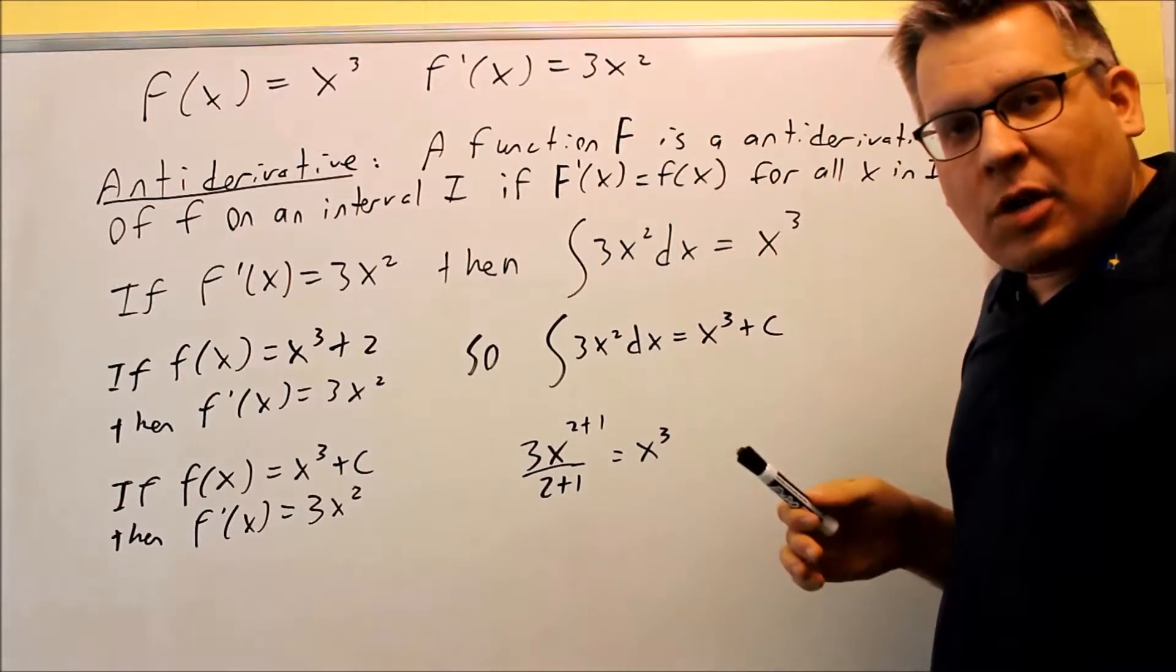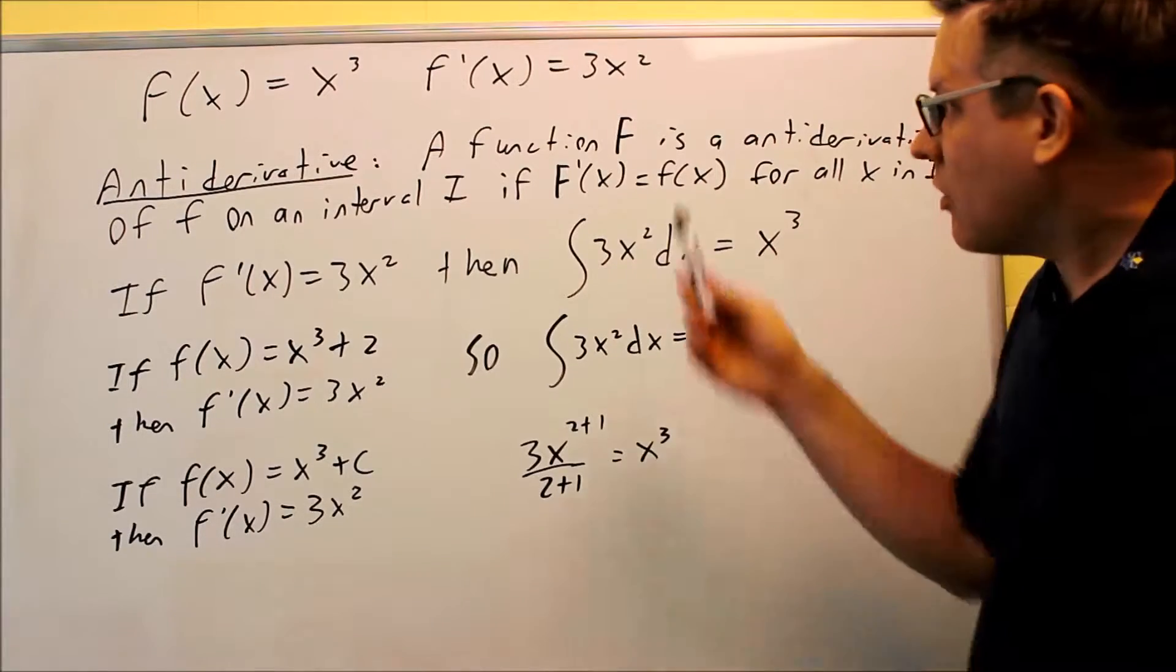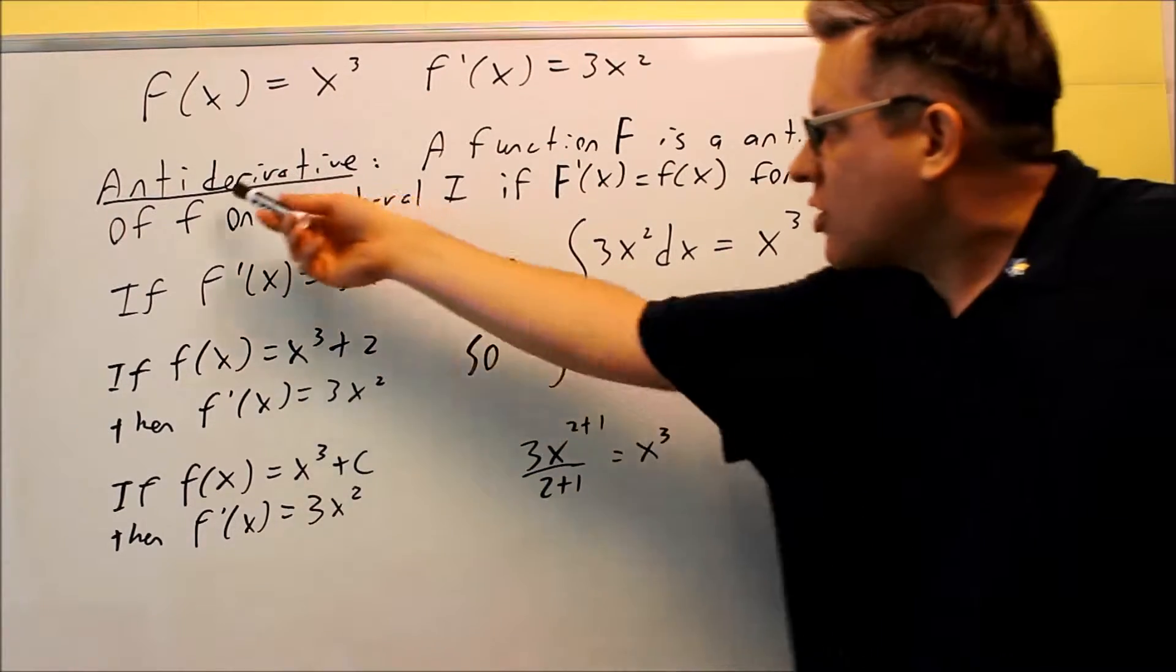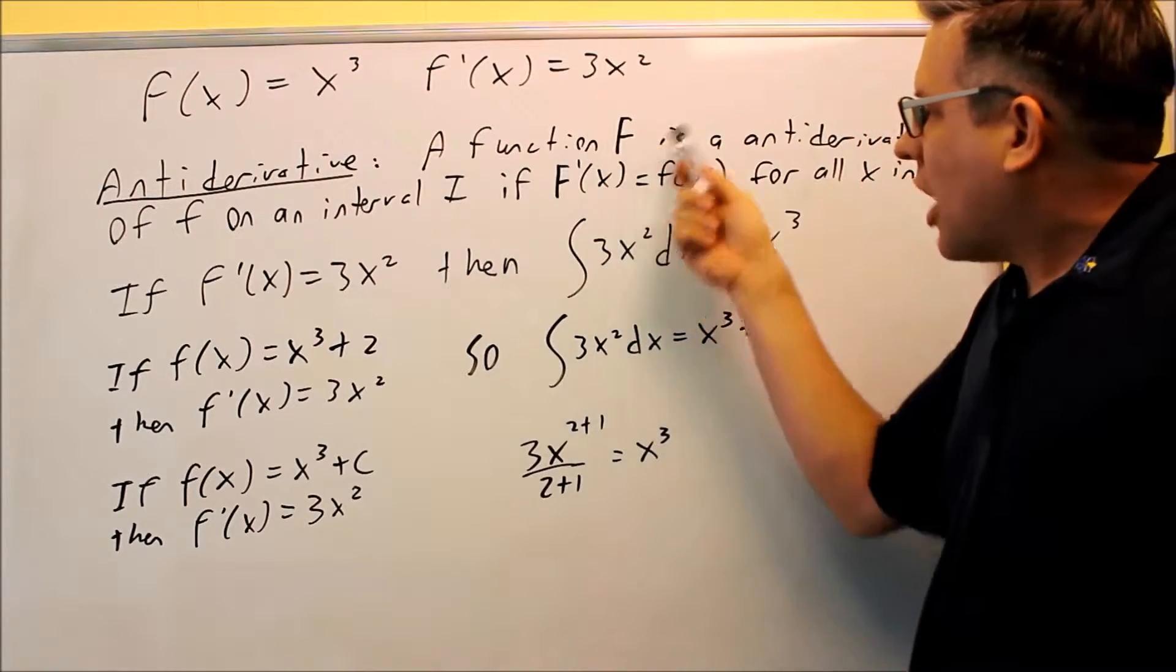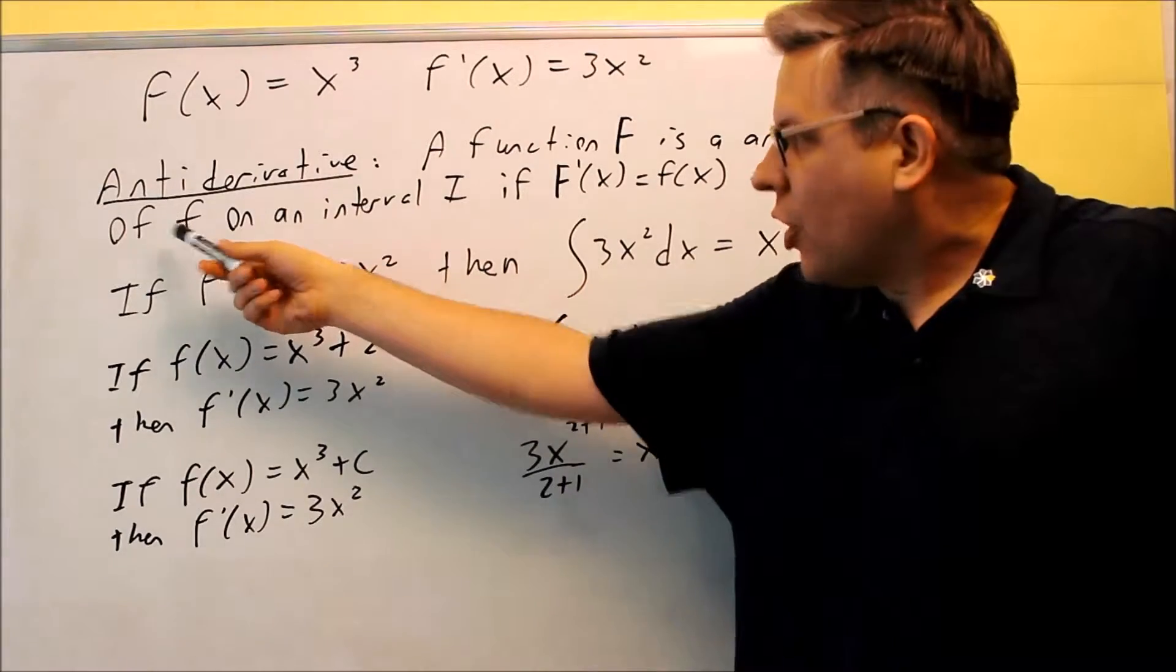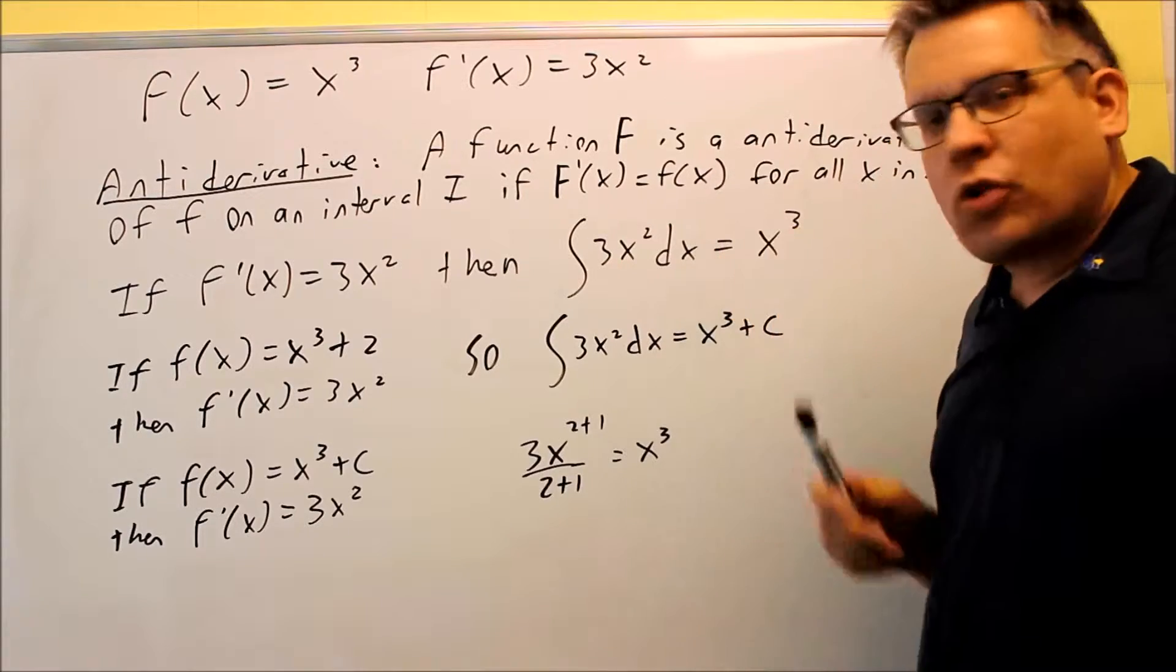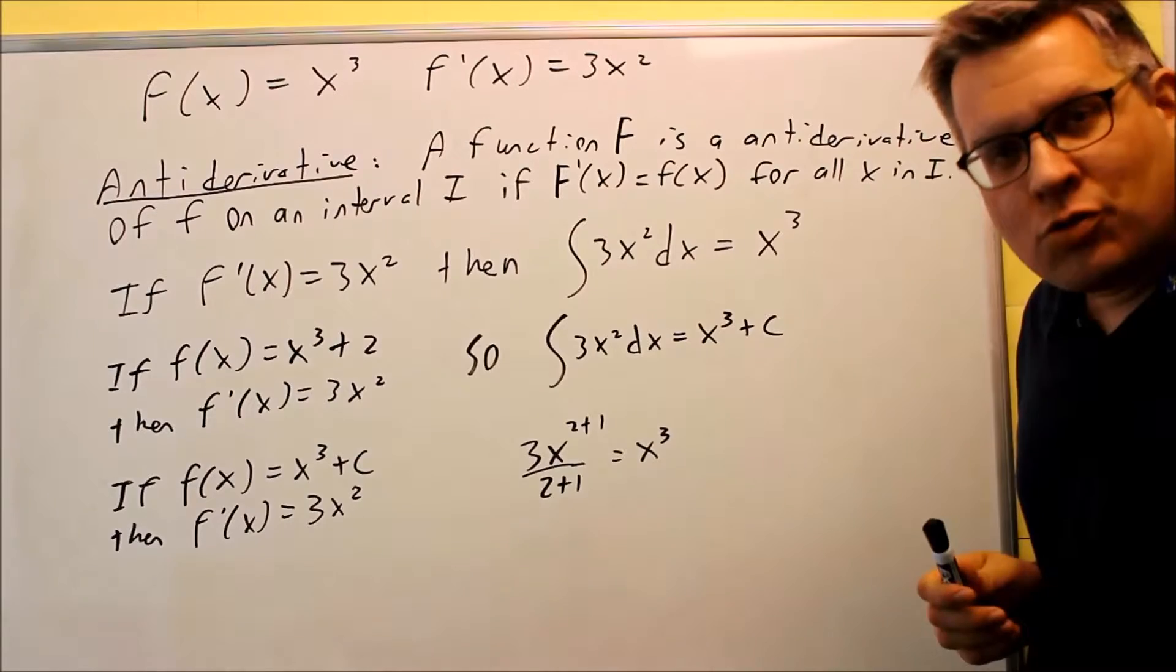What we're going to be talking about in this chapter is going back the other direction. We're talking about starting with the derivative and going back to the original function. In order to do that, we need what's called an anti-derivative. Here's the definition: a function capital F is an anti-derivative of lowercase f on the interval if you take the derivative of capital letter F and you get the original one that you started with. That means this is called your anti-derivative.